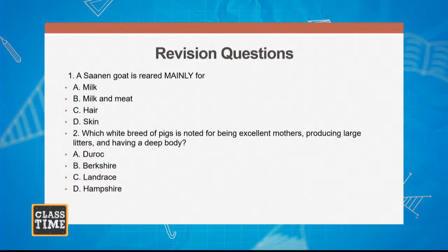Question one: Saanen goats are reared mainly for — A, milk; B, milk and meat; C, hair; D, skin. Write down your answer, students. I want to make sure that you're following me.